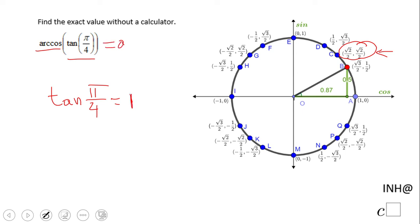So now we're going to have arc cosine of 1.